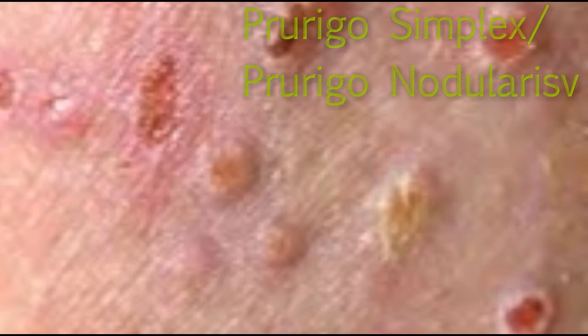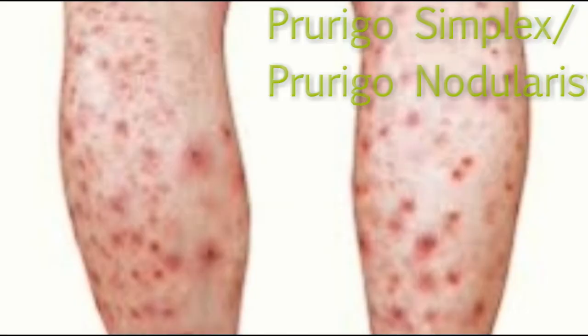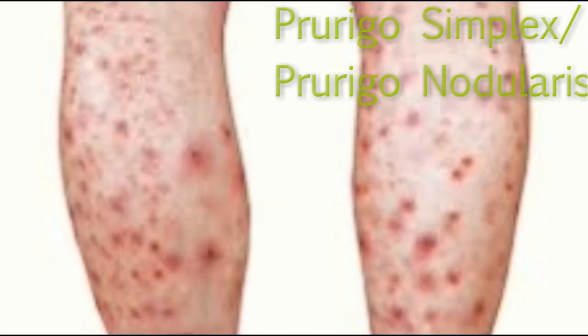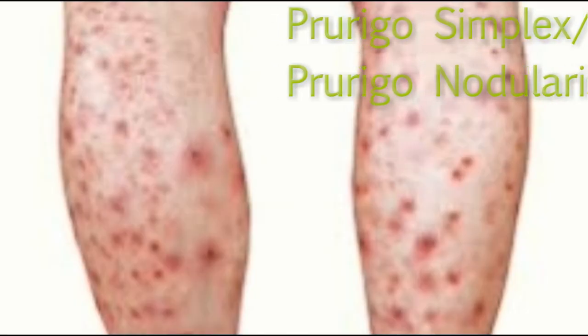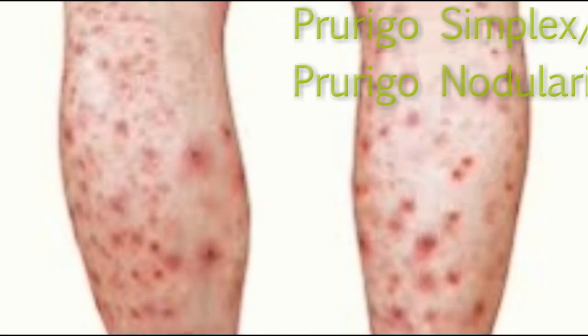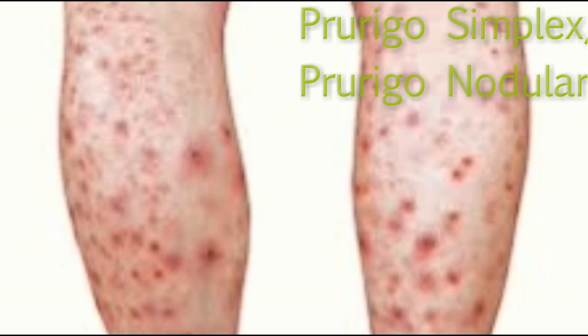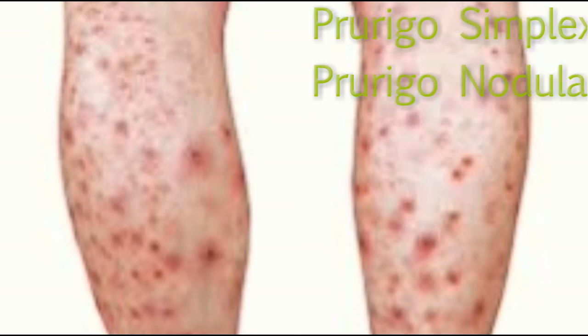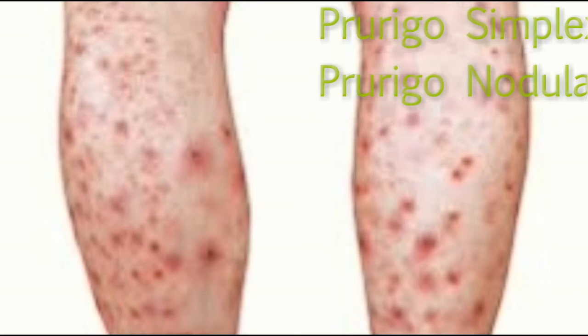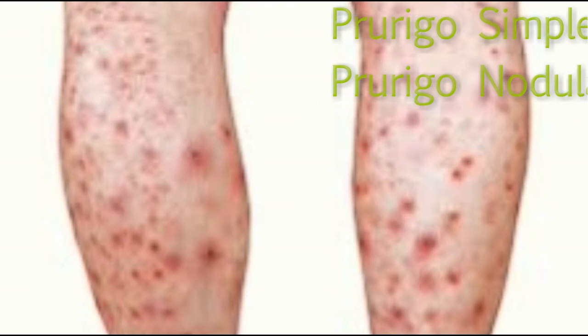Hypertrophy of nerve bundles may be noted. The clinical differential diagnosis of prurigo simplex includes arthropod bites, scabies, folliculitis, papular urticaria, papular eczema, miliaria rubra, dermatitis herpetiformis, and Grover's disease.